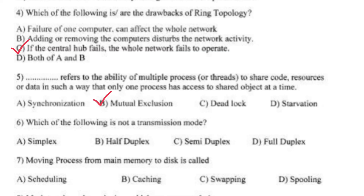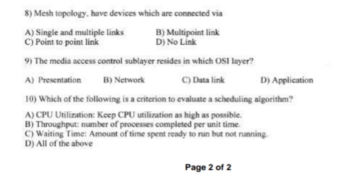Which of the following is or are not transmission modes? — Semiduplex. Moving a process from main memory to disk is called swapping. Mesh topology has devices which are connected via — write optional C — point-to-point link.